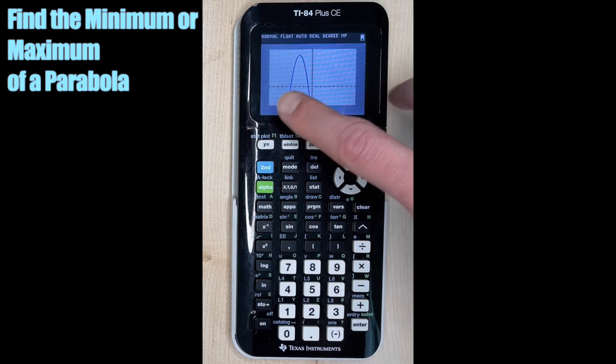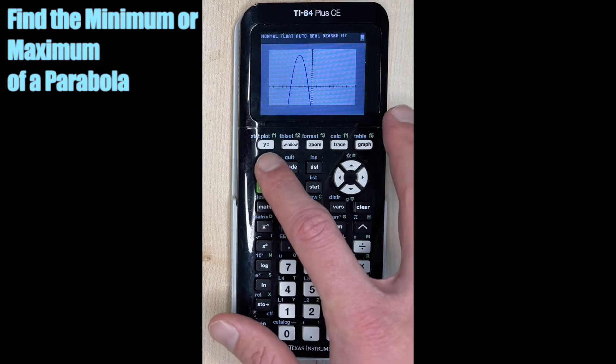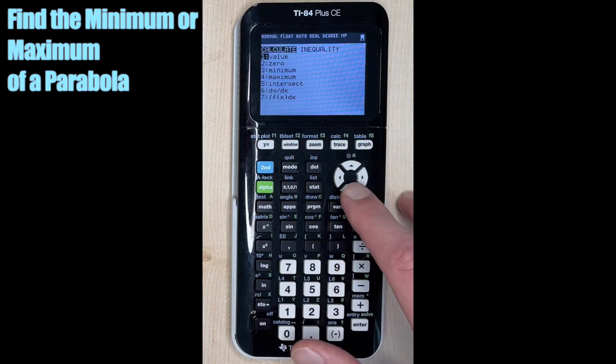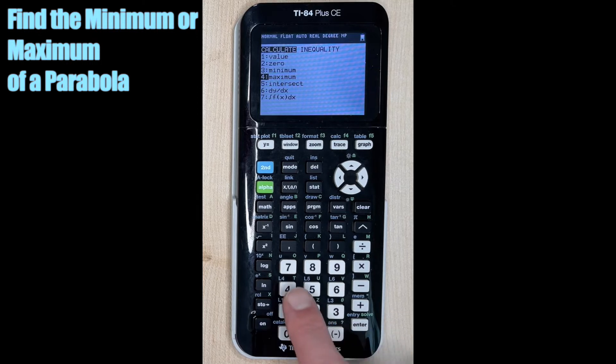So if we go back to the graph, ours is opening down, which means this is our maximum. So that's the one we're going to choose. So second trace, and we want to go down to maximum. You can do that and hit enter, or you can just hit the number four.